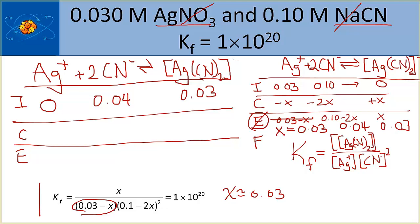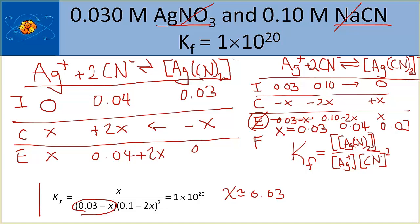Because the silver concentration is 0, the reaction must shift in reverse. So the change row is: silver gets +x, cyanide gets +2x, and the complex ion gets −x. The equilibrium line is: x for silver, 0.04 + 2x for cyanide, and 0.03 − x for the complex ion.